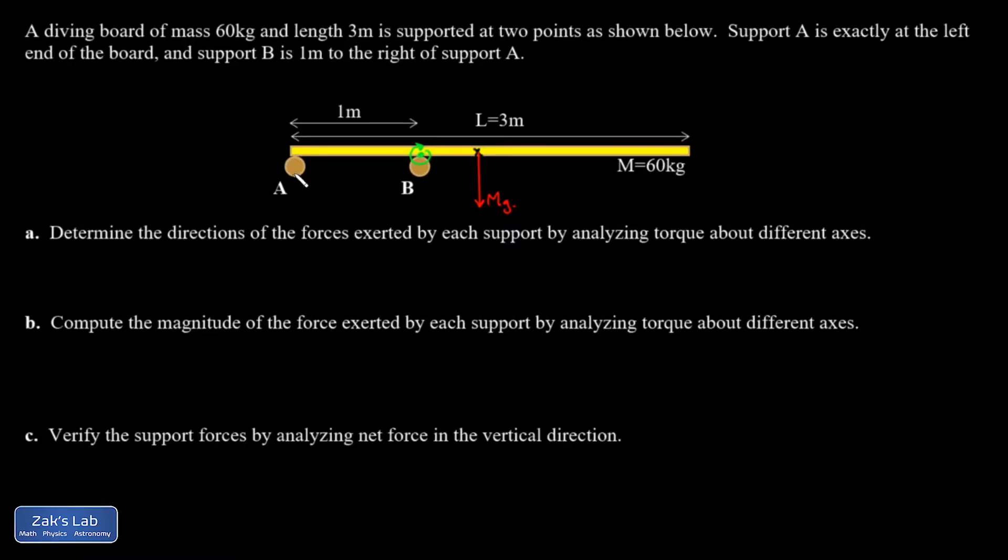And that means A better be providing a counterclockwise torque to keep the torques balanced. So that proves that the force exerted by A is actually downward. And that means the board can't just be resting on it. There has to be some kind of bolt there or hinge holding it in place so that A can actually pull down.